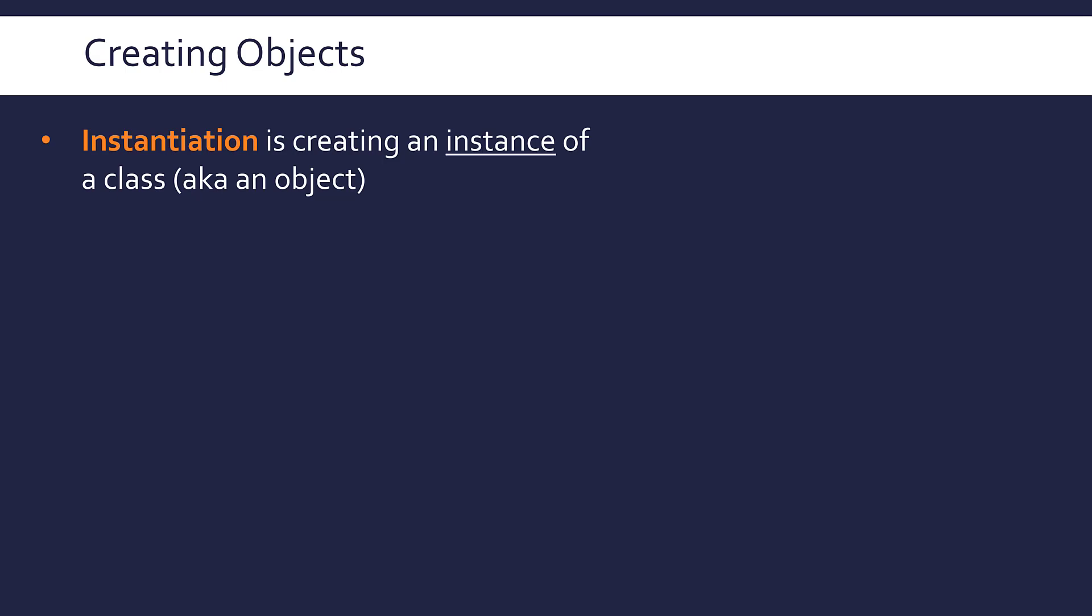Instantiation is creating an instance of a class. We're making a particular implementation of our class, which is what an object is. We've got our template, which is our class. We create it by giving it values and it becomes an object. Instantiation is us doing that process.